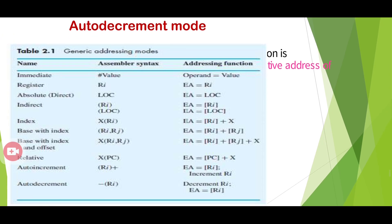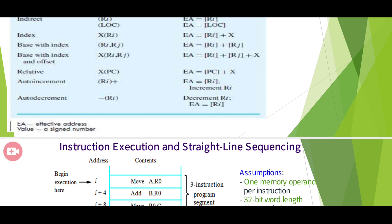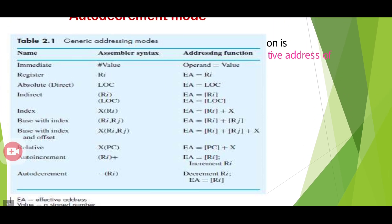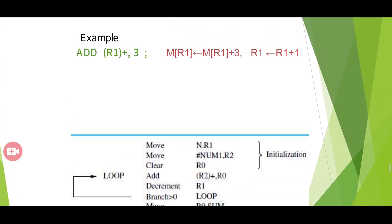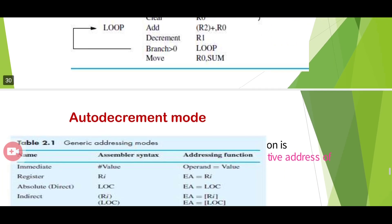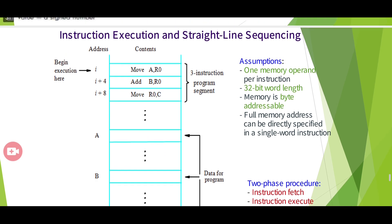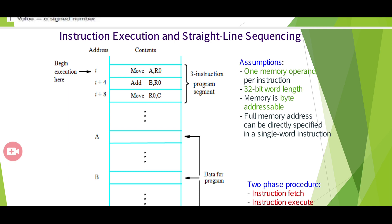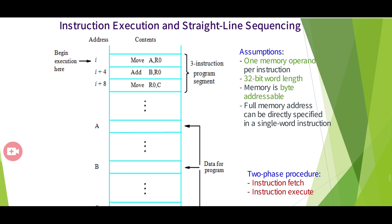Auto decrement mode is the opposite of auto increment mode — the register is decremented before use. In normal instruction execution, straight-line sequencing is followed: instructions are fetched and executed one by one in sequence. For branching or looping, we use condition codes to alter this sequential flow.